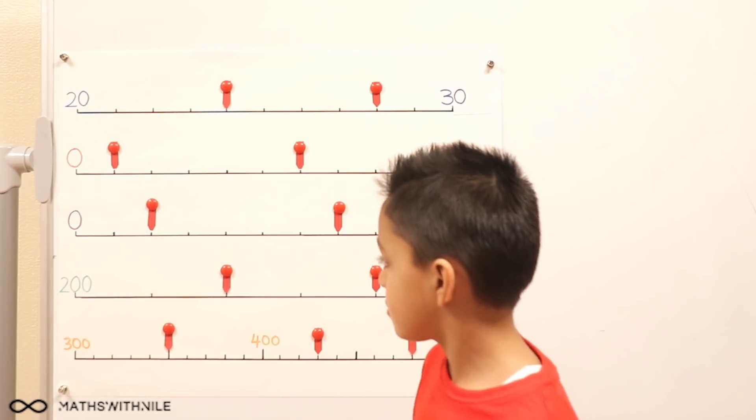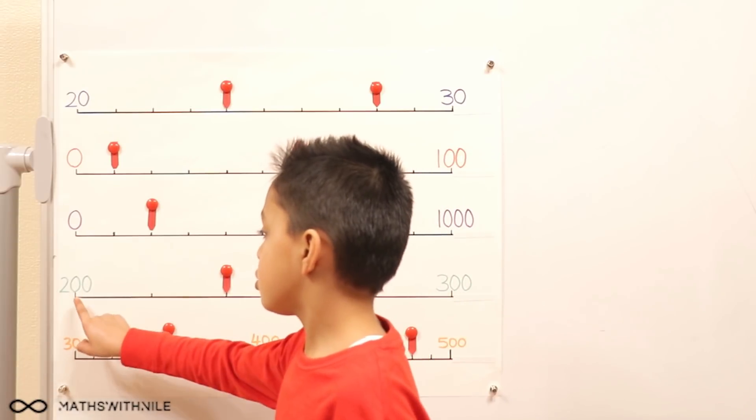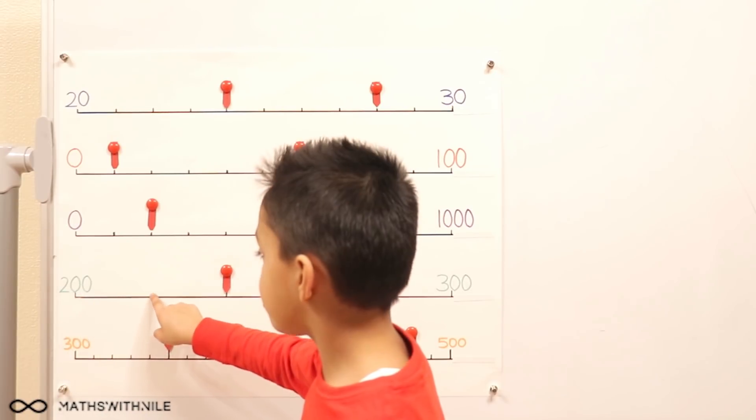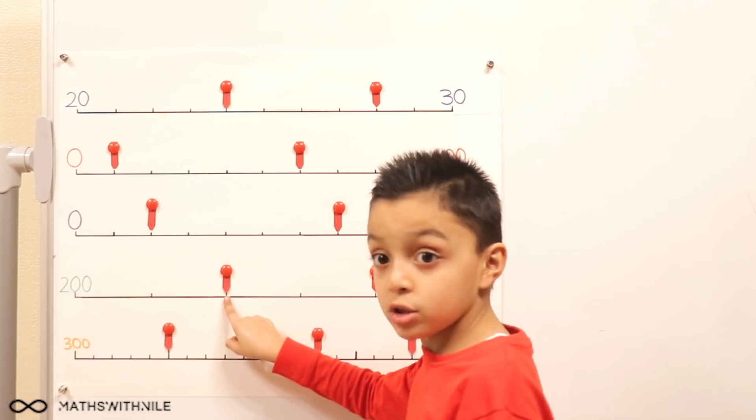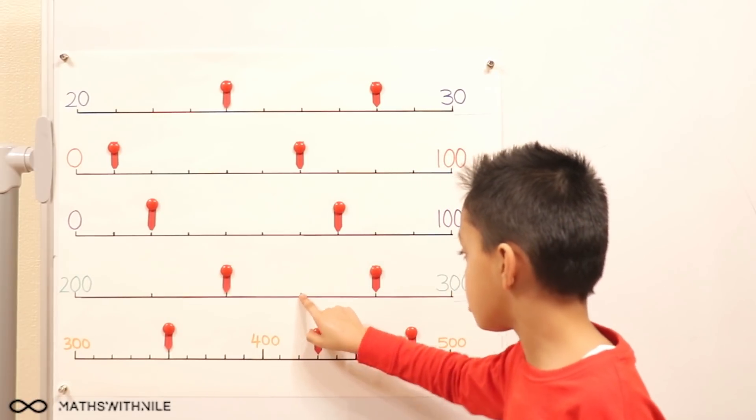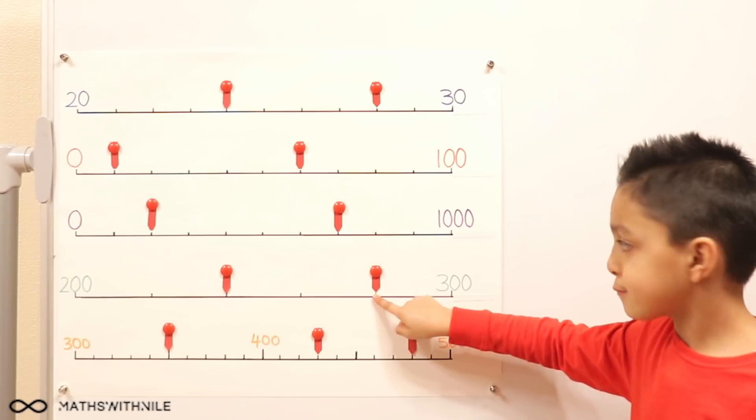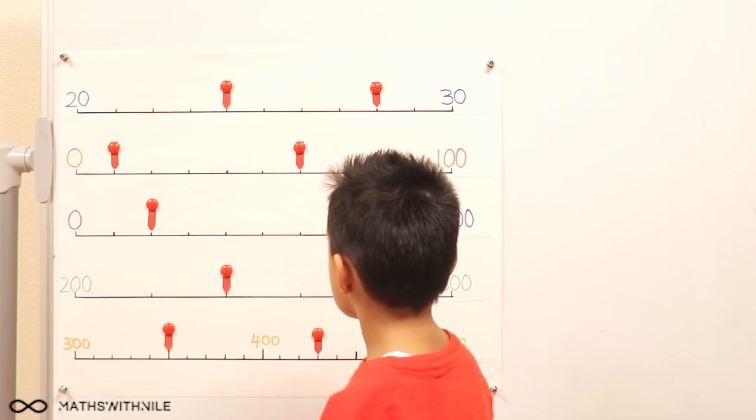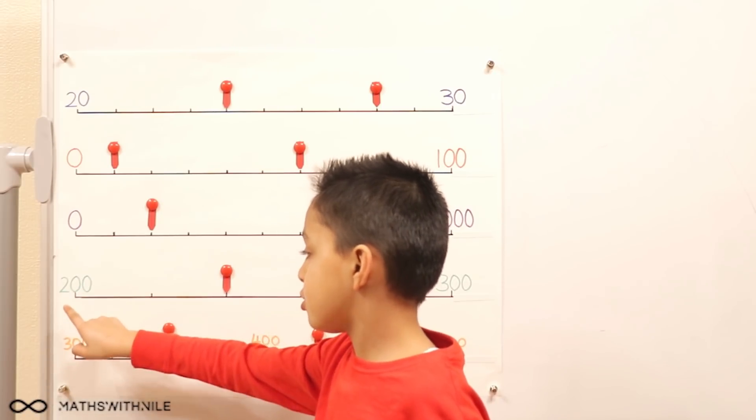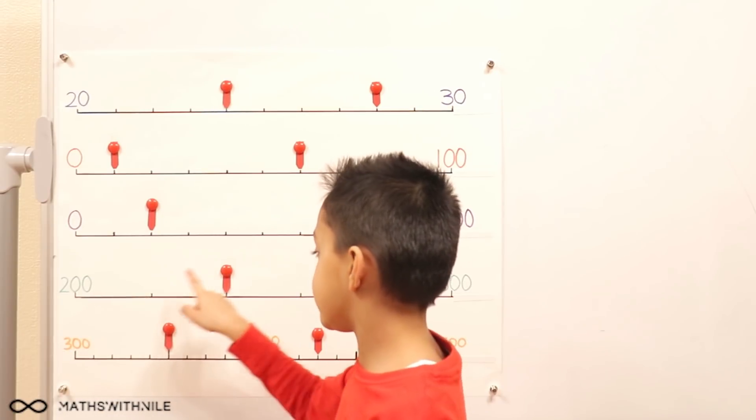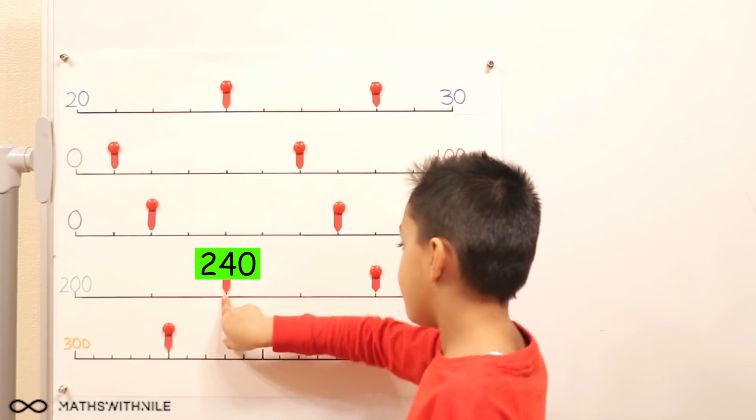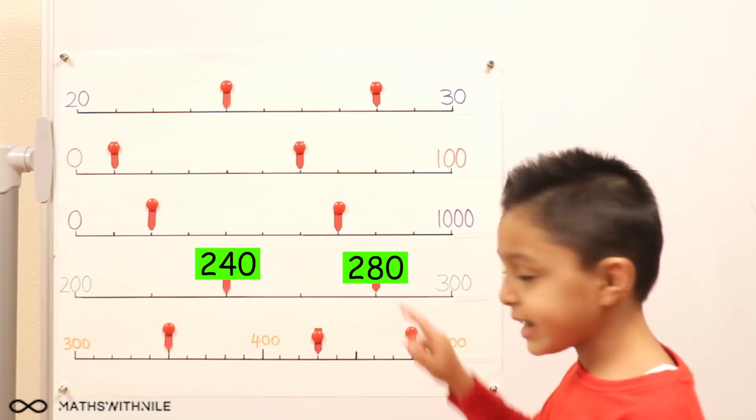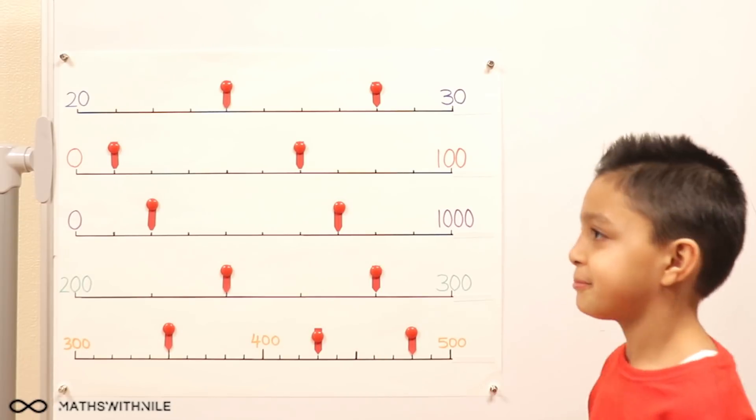So can you check that it's 20 and make sure? Can you count across? Start at 200. 200, 220, 240, 260, 280, and 300. So you're correct, it's 20. So what's the value of the two numbers? So 200, 220, 240. So the first one is 240. And 260, 280.